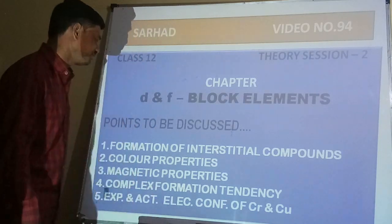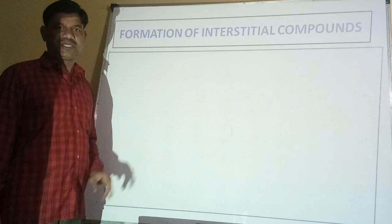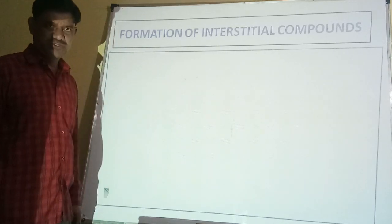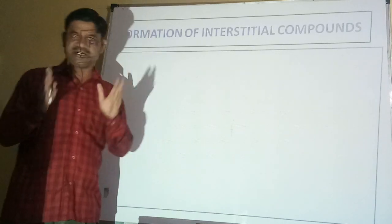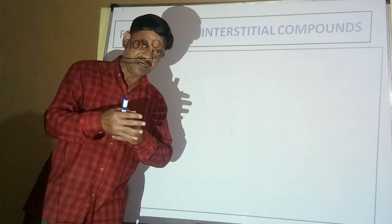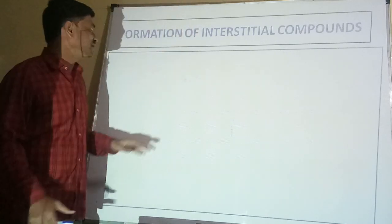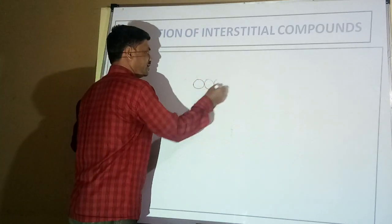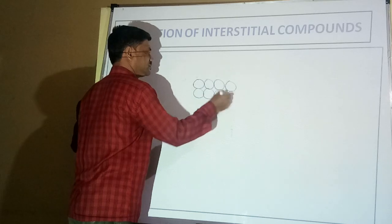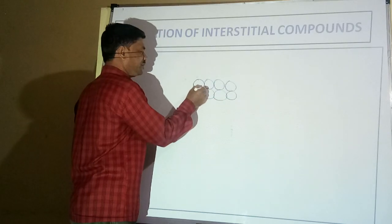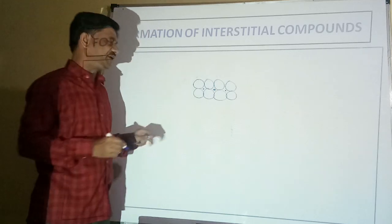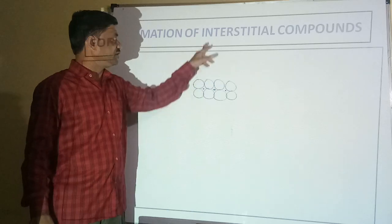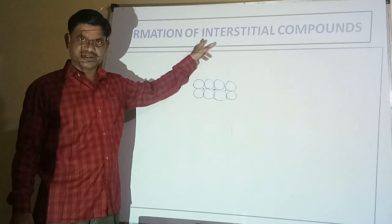Let us start with the first point: formation of interstitial compounds. D block elements have the tendency to entrap atoms of other elements in order to form interstitial compounds. Suppose these are D block element particles — in between them, there is presence of smaller interstitial particles. So due to entrapping of atoms of other elements in between them, they form interstitial compounds.